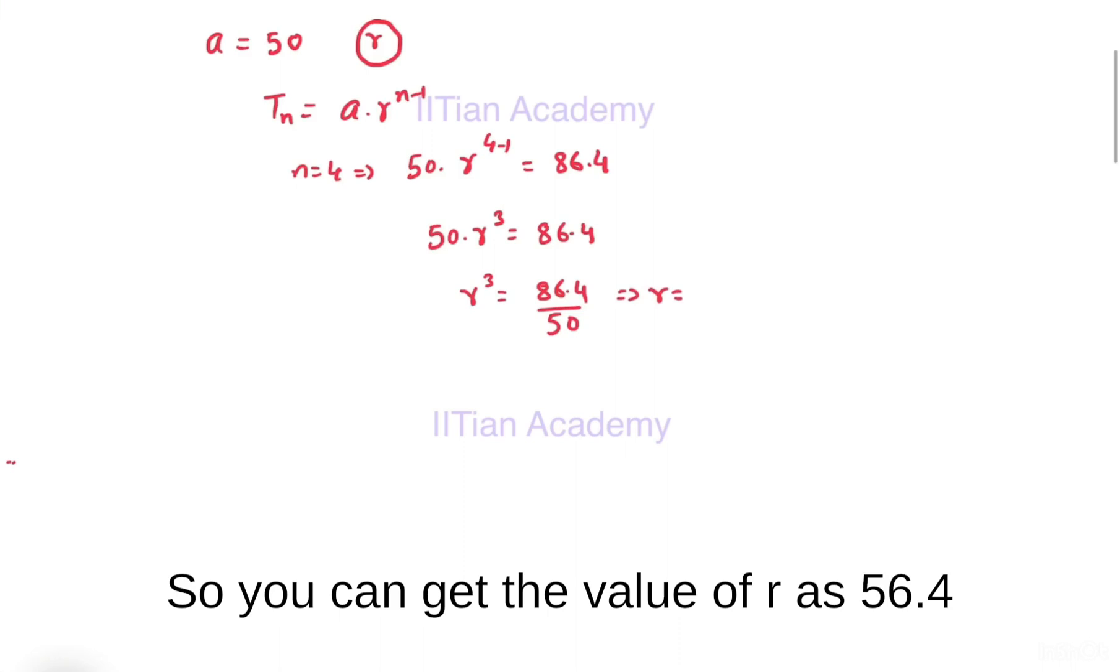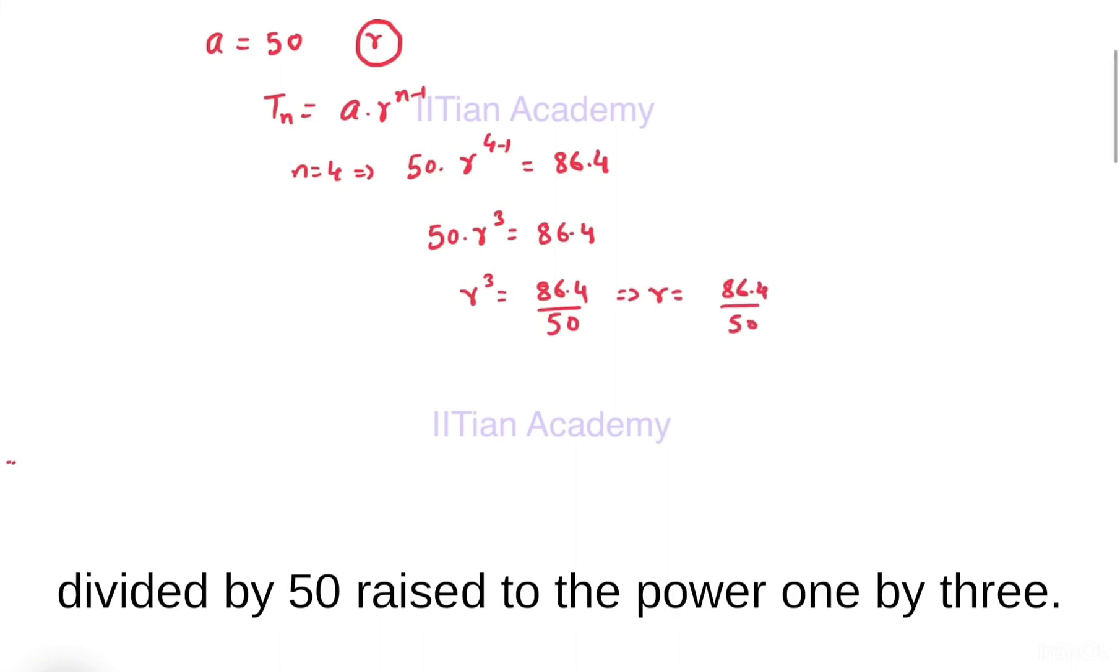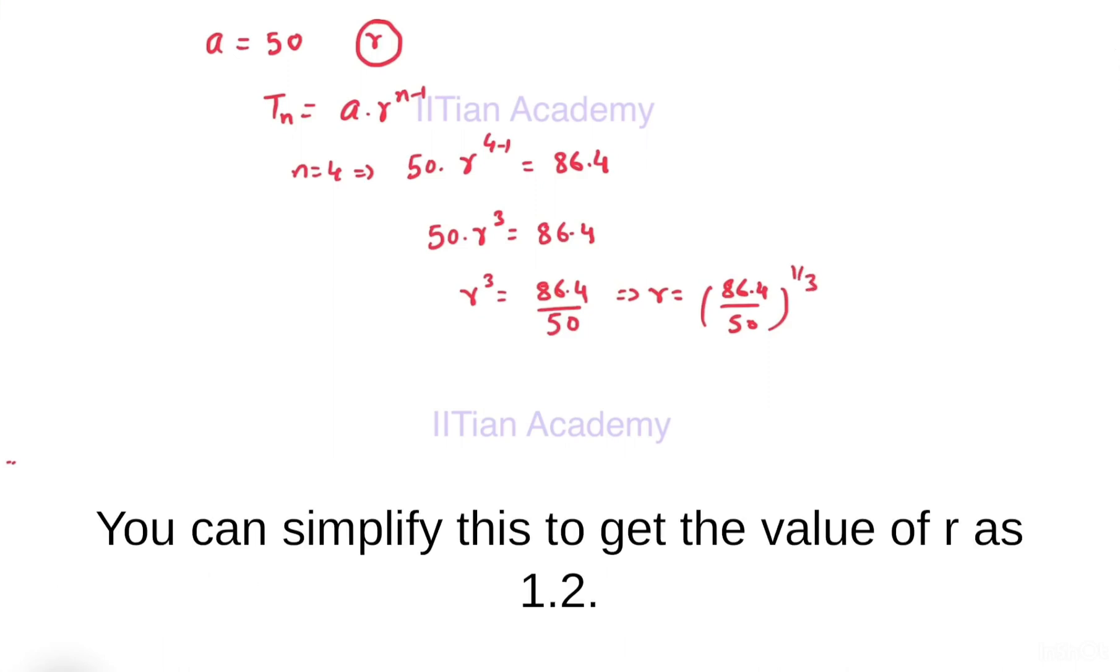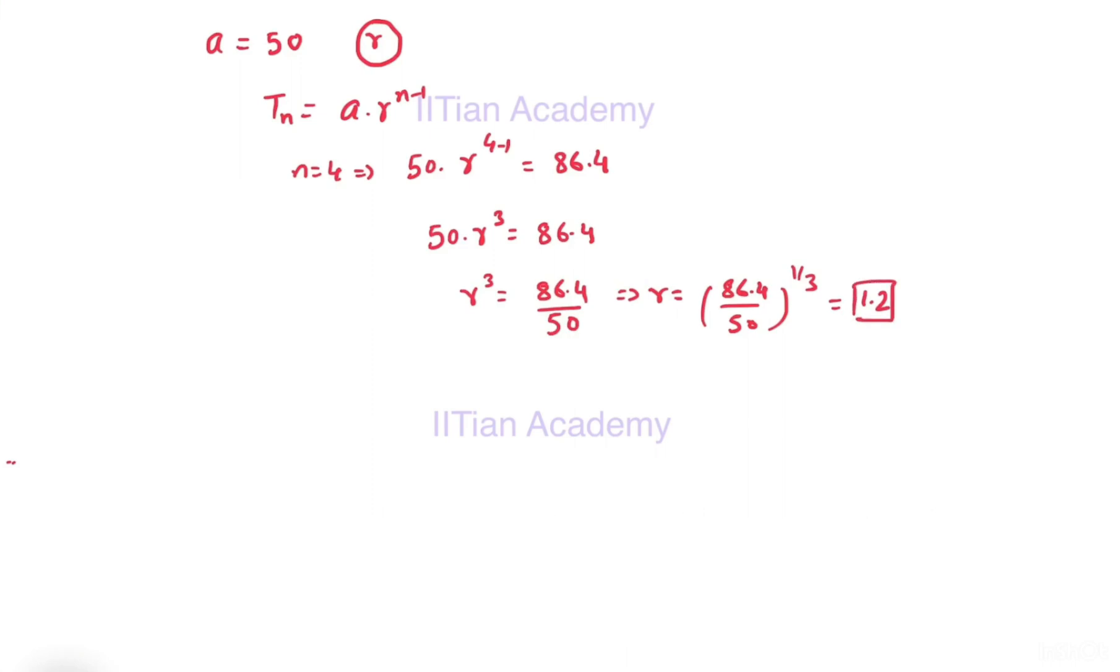You can simplify this to get the value of r as 86.4 divided by 50 raised to the power 1 by 3. You can simplify this to get the value of r as 1.2. The common ratio for this GP is 1.2 and the value of a is given in the question as 50.